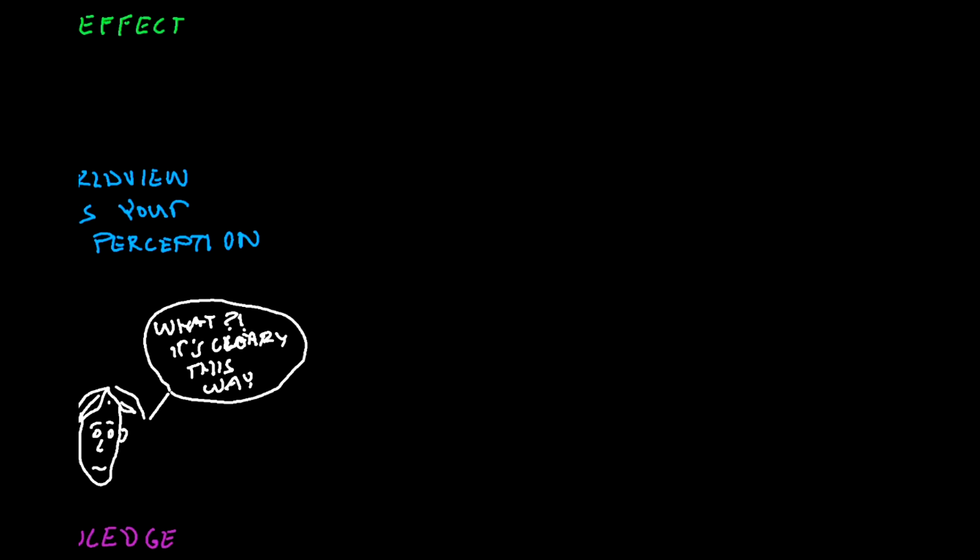So systems theory is really about causal feedback systems. A gives rise to B, which gives rise to C, which feeds back and adjusts A again. This is called a feedback loop, and this is happening all of the time in natural systems and in social systems too.